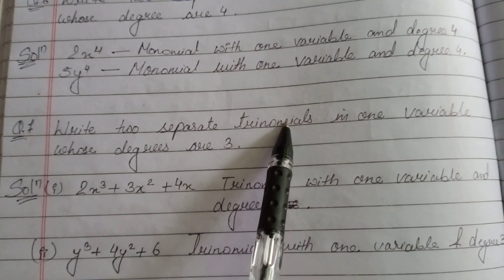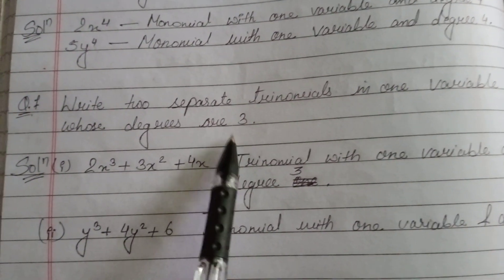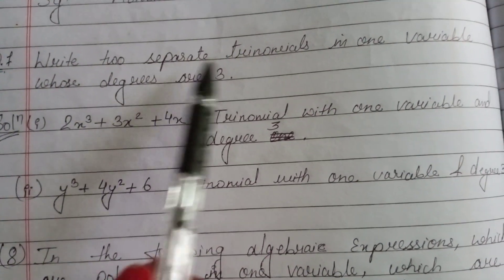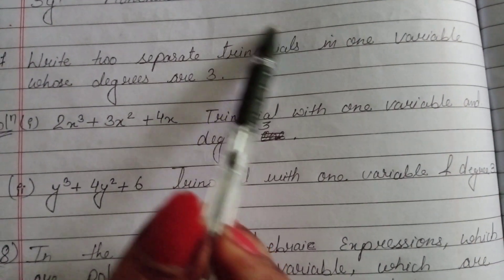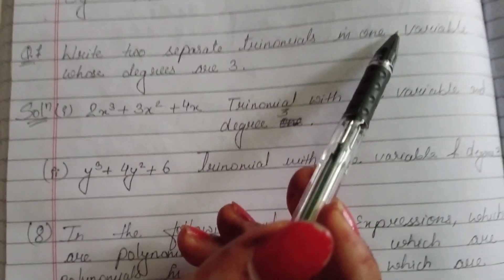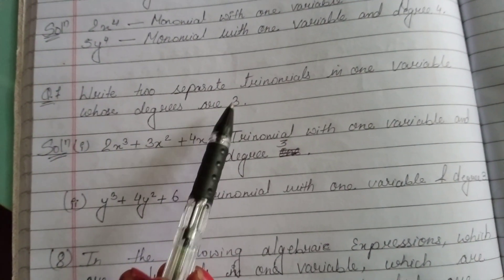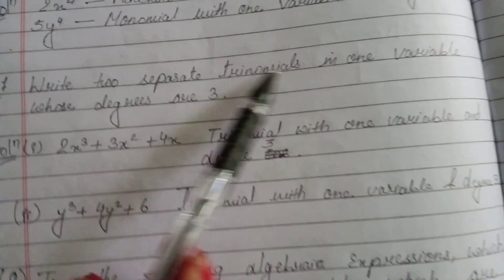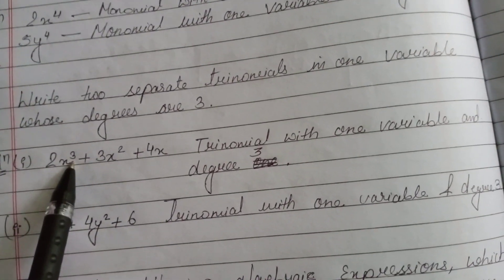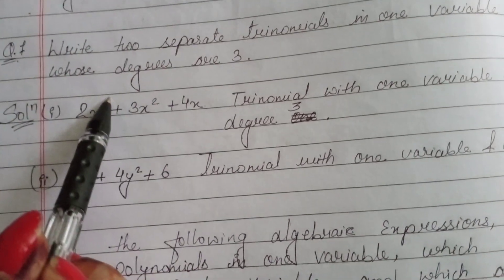Question 3: write two separate trinomials in one variable whose degree are 3. Trinomials means three terms; one variable means only either x or y; degree 3 means the highest power must be 3. The first example is 2x cubed plus 3x squared plus 4x — power is 3, it has three terms, making it a trinomial.